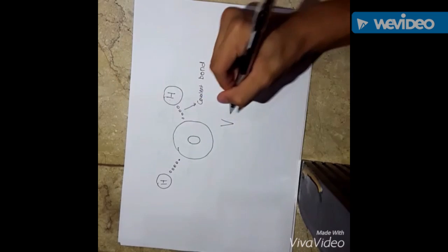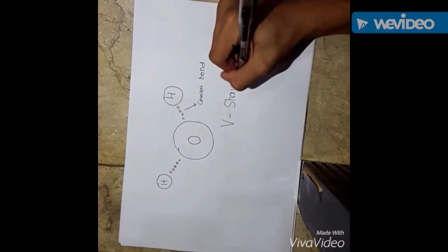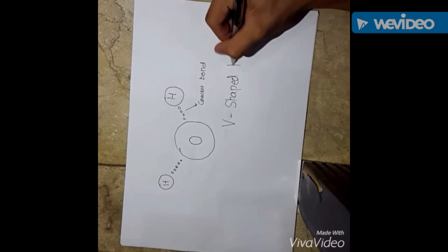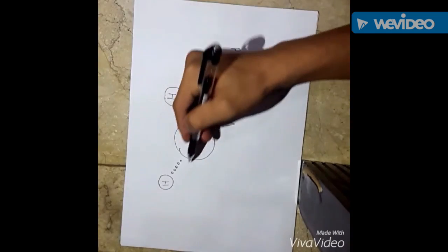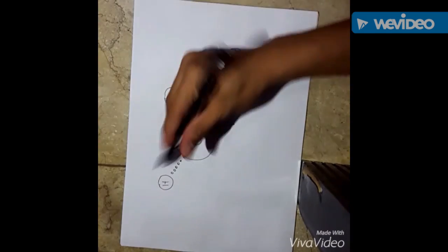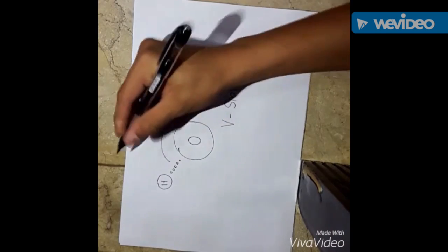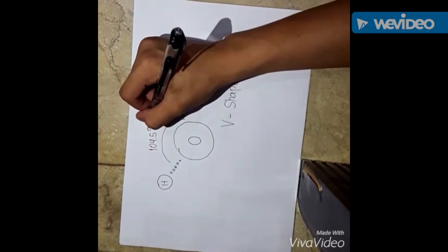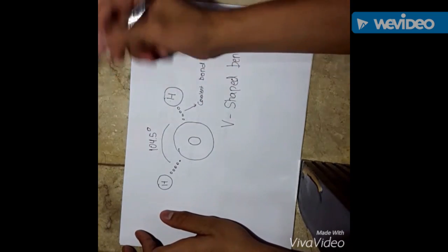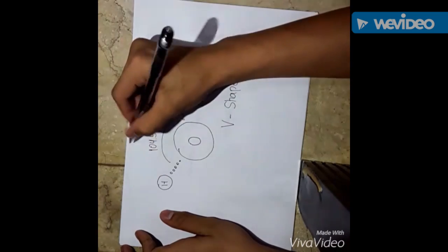In chemistry, it has a molecular geometry of a V-shaped band. As you can see, it has a V-shape, and it has an angle of 104.5 degrees.